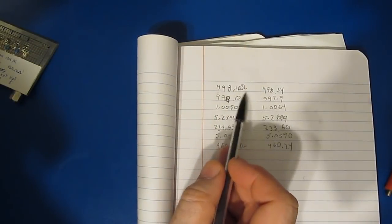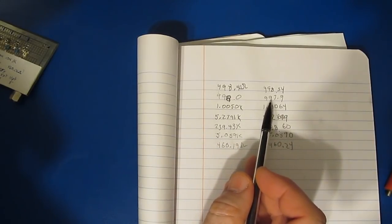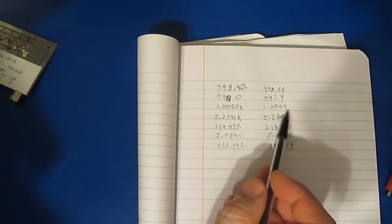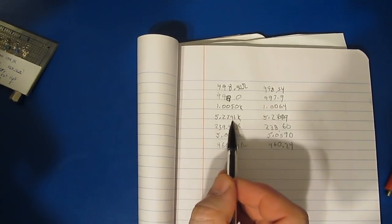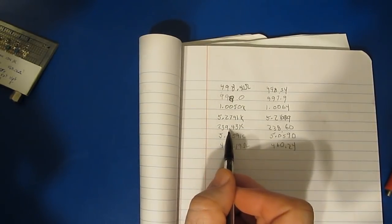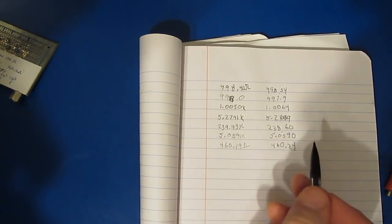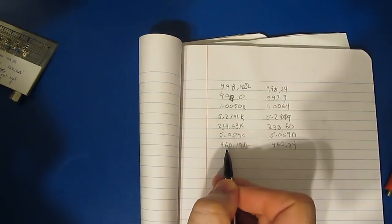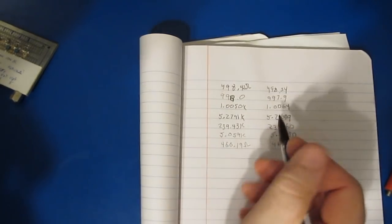Our first one is 498.43 versus 498.54. Then 998.0 versus 997.9. And then 1.0050 versus 1.0064. This one starts to get a little wonky. You can see it's 5.2791K versus 5.2699K. 239.43 versus 238.6. 5.0591K versus 5.0590, pretty much dead on. And the last one is 460.19 versus 460.24. So all of them are fairly close.